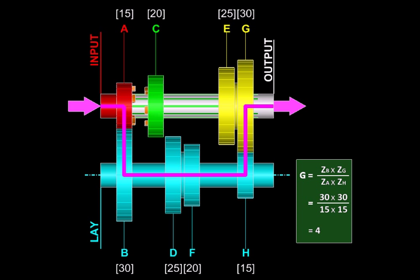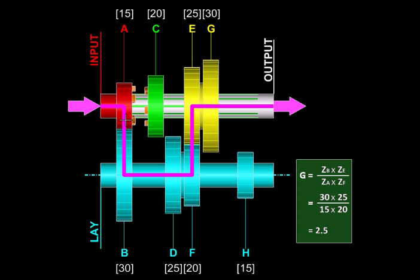Then we are going to engage the second gear. In second gear we slide this yellow gear to the left so power starts flowing like this. You can see there is a reduction but not as much as in the first gear and the gear ratio has thus reduced to 2.5.